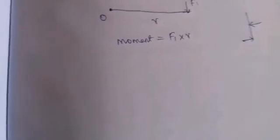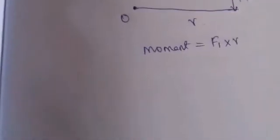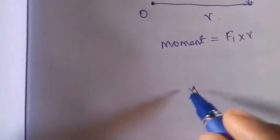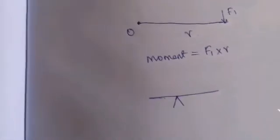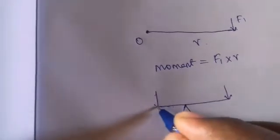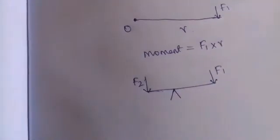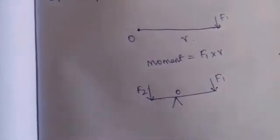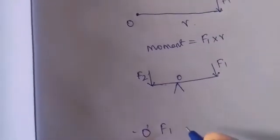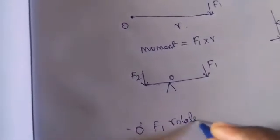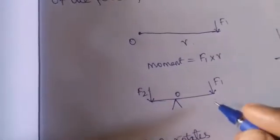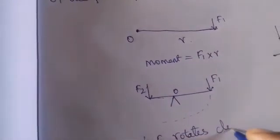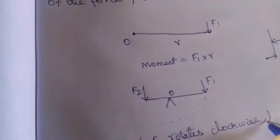There are two types of moment: clockwise moment and anticlockwise moment. For example, here is a point, here is a rod, and here are forces F1 and F2. F1 rotates in the clockwise direction — this is called clockwise rotation.